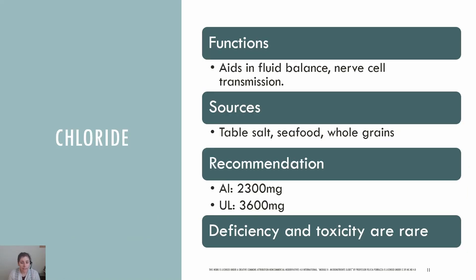Chloride is prominent in intracellular fluid and one of the most important extracellular anions. Functions of chloride include fluid balance, acid-base balance, and nerve cell transmission. Dietary chloride deficiency is rare, and most chloride in the diet comes from salt. Other sources include whole grains and seafood. The AI for chloride is 2,300 mg. Toxicity is rare with chloride, but the UL is set at 3,600 mg for adults.